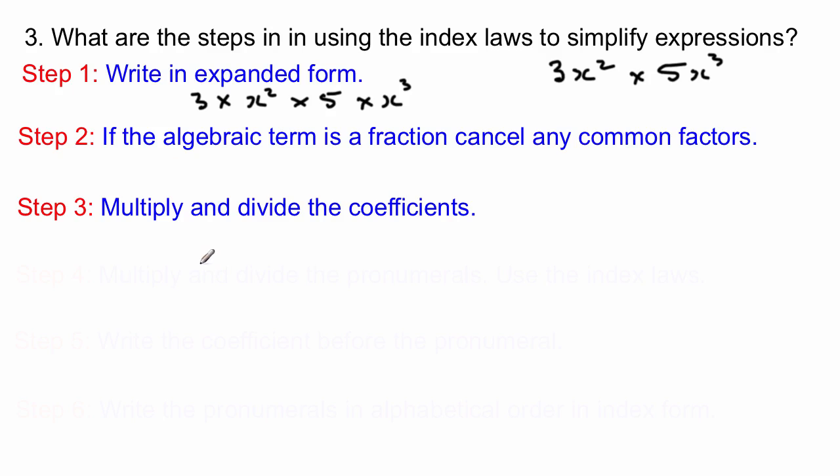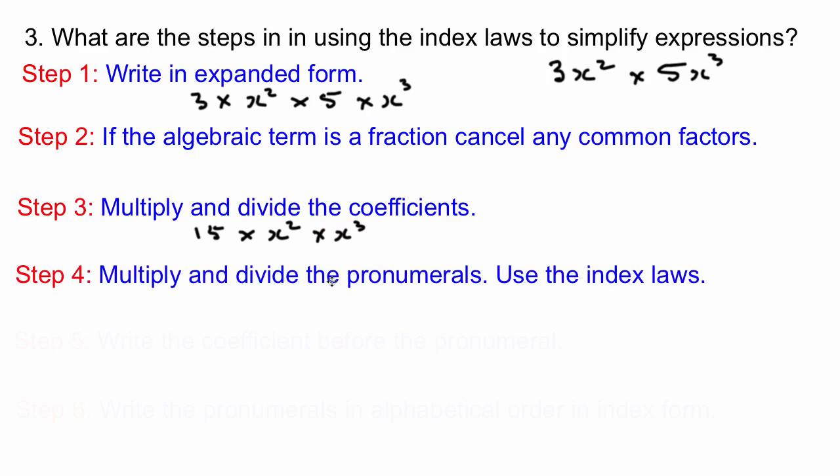The next step rather is to multiply and divide the coefficients. So we've got 3 and 5 there, the coefficients. Remember the number in front of the letter is the coefficient. So we're going to multiply 3 and 5 together and we get 15. So we'll just leave the indexes as they are at the moment. And the next step is to multiply and divide the pronumerals using the index laws. So you'll notice that the law that we're going to use here is because we're multiplying two bases that are the same. We add the indexes and that will give us then 15 times x to the power of 5.